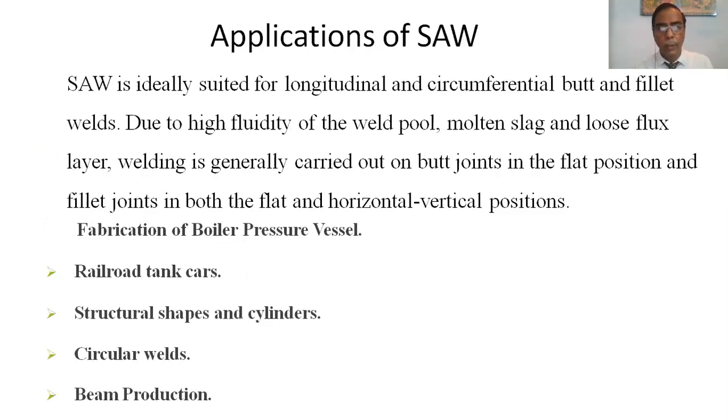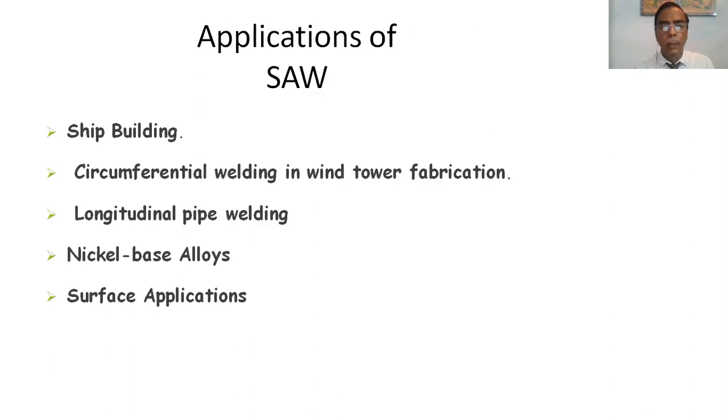Applications of SAW is ideally suited for longitudinal and circumferential butt and fillet welds. Due to high fluidity of the weld pool, molten slag and loose flux layer, welding is generally carried out on butt joints in the flat position and fillet joints in both the flat and horizontal vertical positions. Fabrication of boiler pressure vessels, railroad tank cars, structural shapes and cylinders, circular welds, beam production, nickel base alloy surfacing applications.